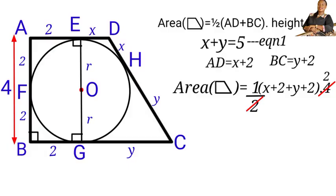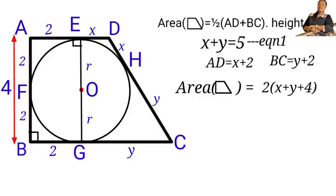So, 2 will divide 4, we have 2 here. Then we are going to have 2 times (x plus y plus 4). From my equation 1, x plus y equals 5, so we are going to substitute the value of x plus y as 5 in this place. We will have 2 times (5 plus 4). So, area equals 18 square units. Finally, the area of this trapezoid is 18 square units.